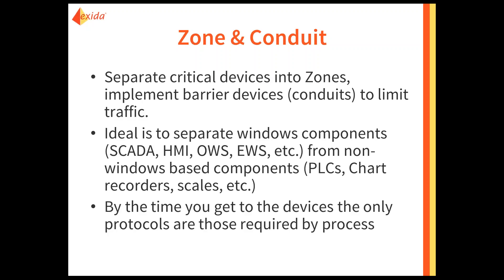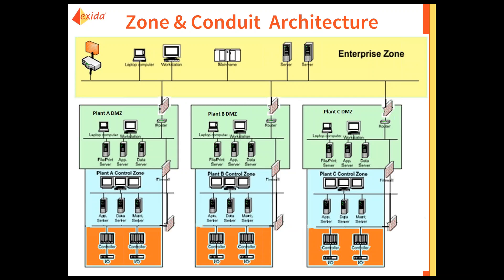The whole goal of network segmentation is that by the time you get to these end devices, only the protocols required to run those devices should get to them — and that's what the firewalling is doing. Here we've taken our original architecture, reviewed what needs to happen, and developed a zoning conduit architecture. At the top we have our connection to the internet, which is routed and firewalled. We have our desktop enterprise stations, and a firewall and router creating an isolated but dedicated connection to three plant DMZs.